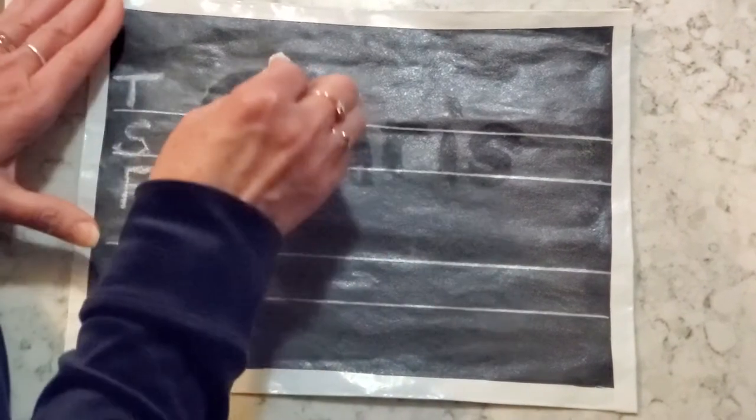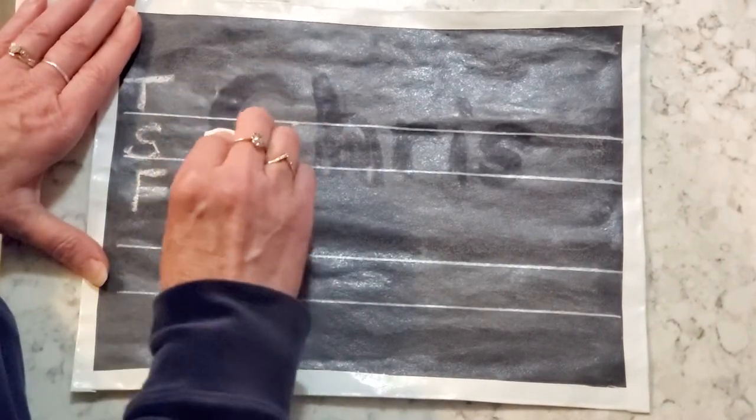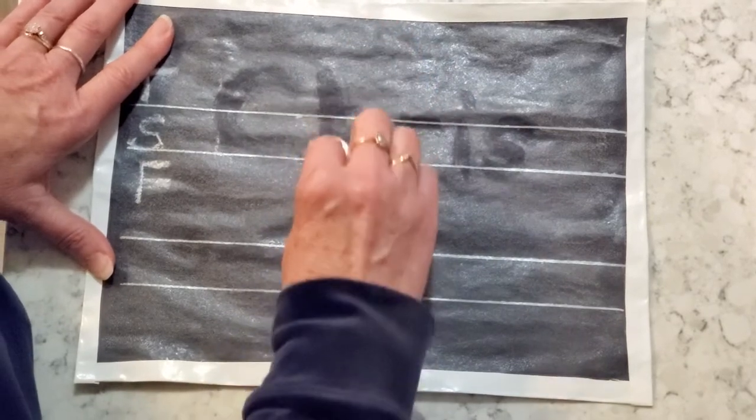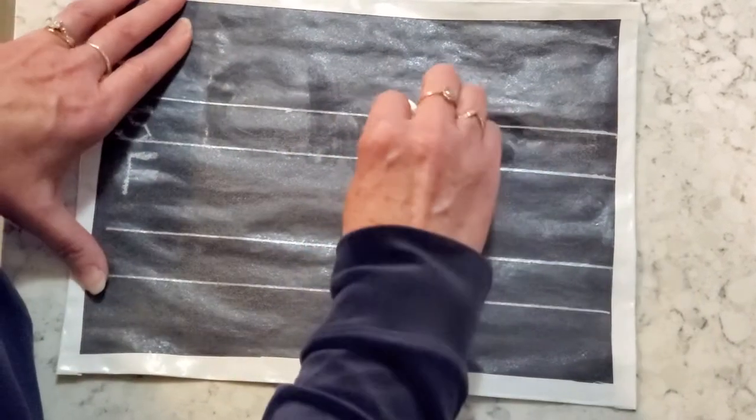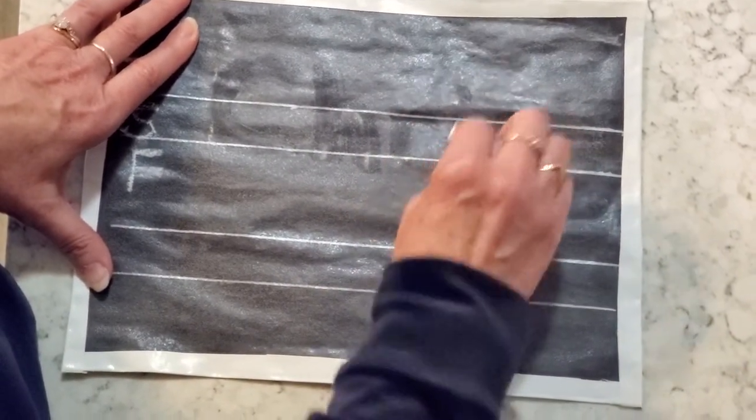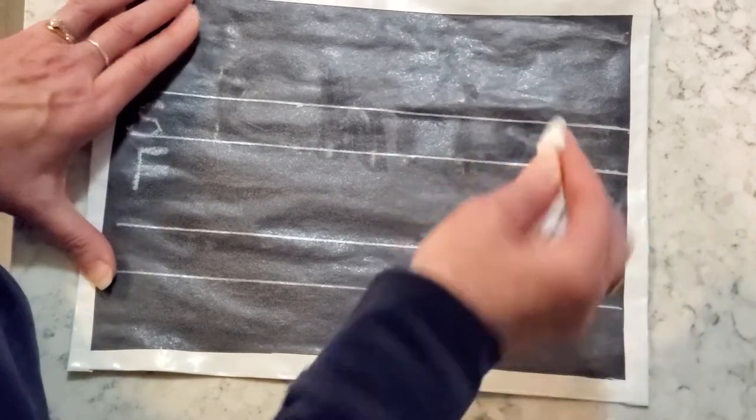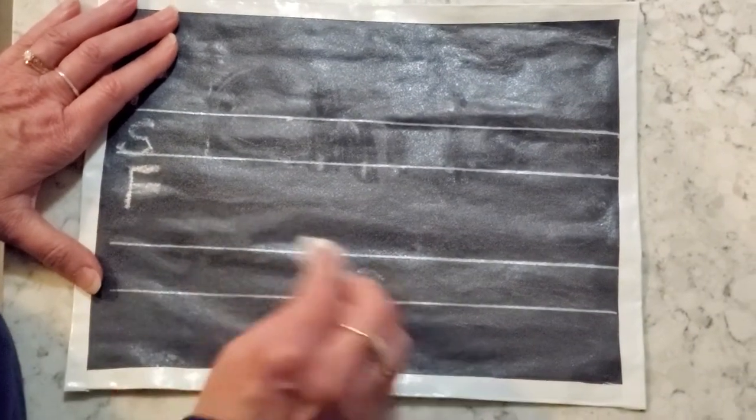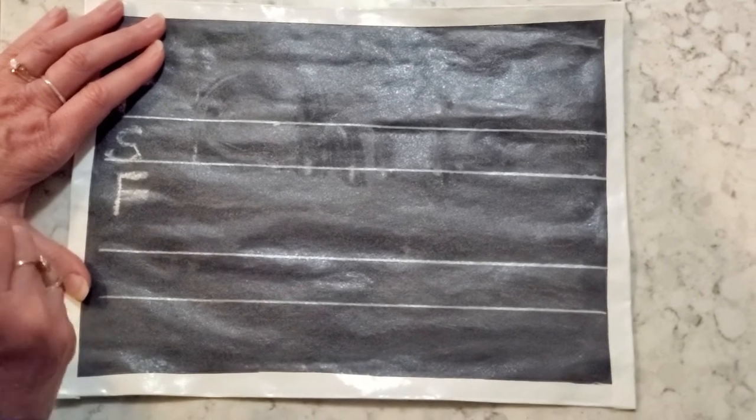And then they're going to go back and do the dry part. So that was wet, now we're doing dry. And they're going to go along and do the letters to dry. Make sure that you have them do it in the direction of the letters and not just rub it like that to dry it.